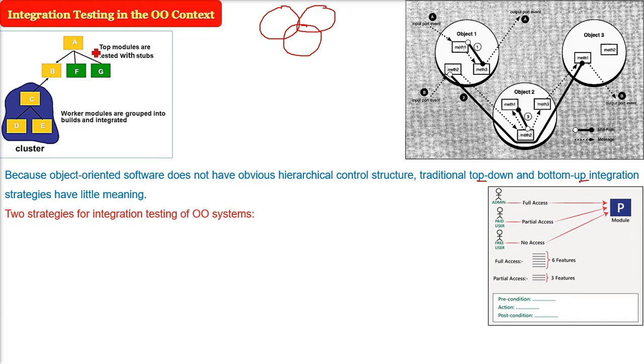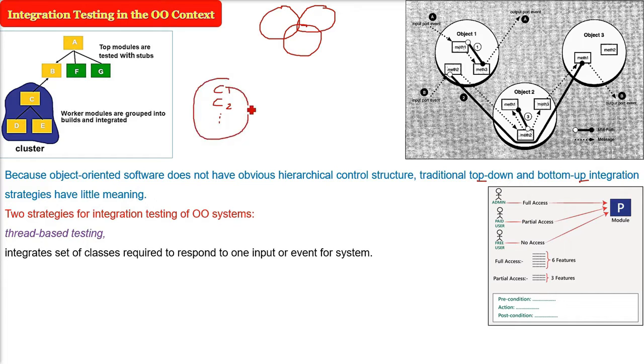In object-oriented integration testing, we have two strategies. First is thread-based testing. This thread is not equivalent to the thread we talk about in operating systems. We will take certain classes, a subset of classes which are going to respond to one input or an event for the software or the system.